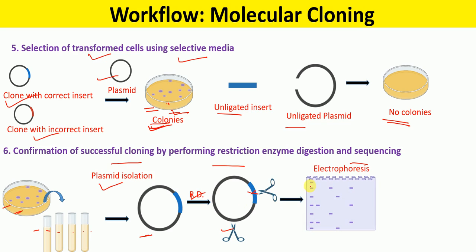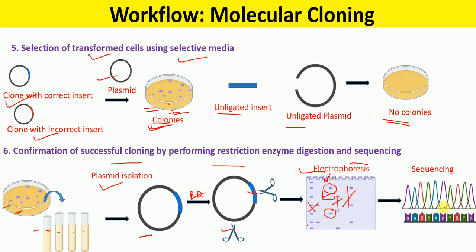We run agarose gel electrophoresis and check that the restriction digested mixture has the correct band sizes as expected. For example, these two bands are the expected bands — we select only the clone showing correct expected sizes, and reject clones showing incorrect band sizes. In the final step, after confirming the clone is correct by restriction digestion, we perform sequencing to confirm that the clone has the correct insert sequence.